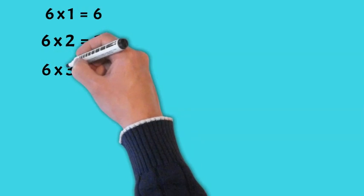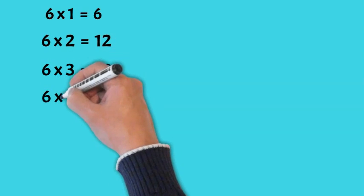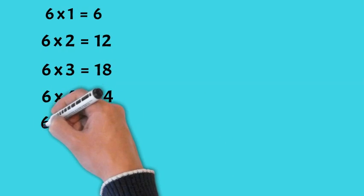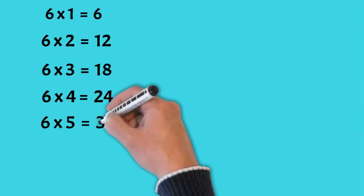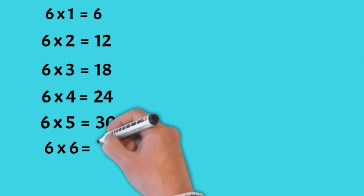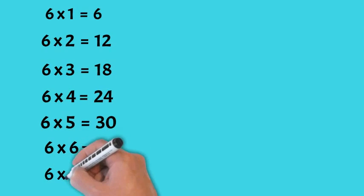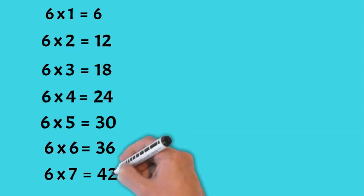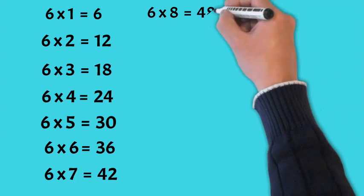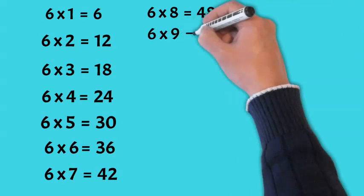6 times 3 is 18. 6 times 4 is 24. 6 times 5 is 30. 6 times 6 is 36. 6 times 7 is 42. 6 times 8 is 48. 6 times 9 is 54.